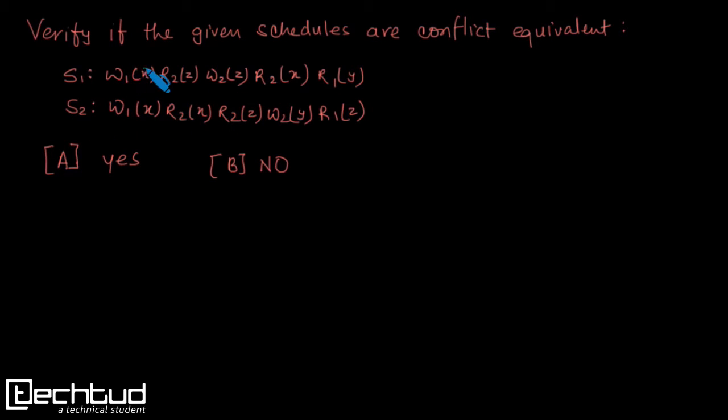To start with we should find out what are conflicting operations. Here we have W1(X), so let's find out a transaction which is either write or read belonging to some different transaction and working on same variable X. Here we have R2(X). Yes, it belongs to different transaction and it is read. So yes, these two are conflicting operations.